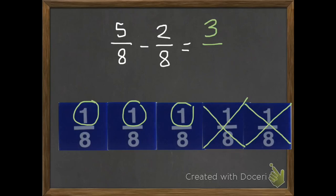So that means I have 3, and we're using eighths, so 3 eighths. 5 eighths subtract 2 eighths equals 3 eighths.